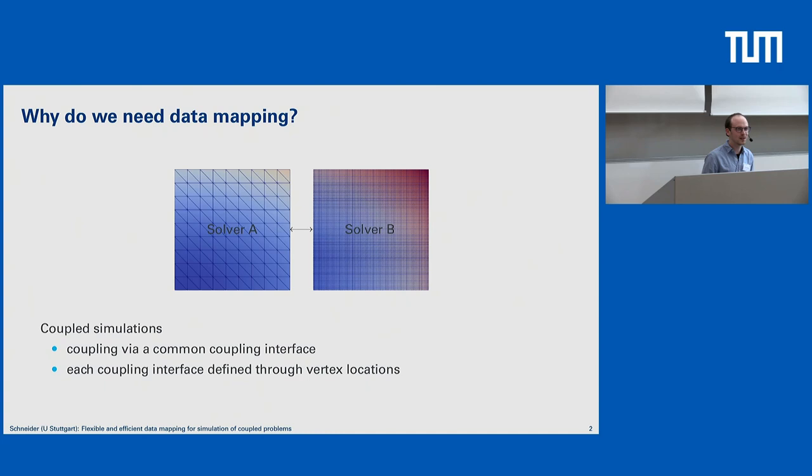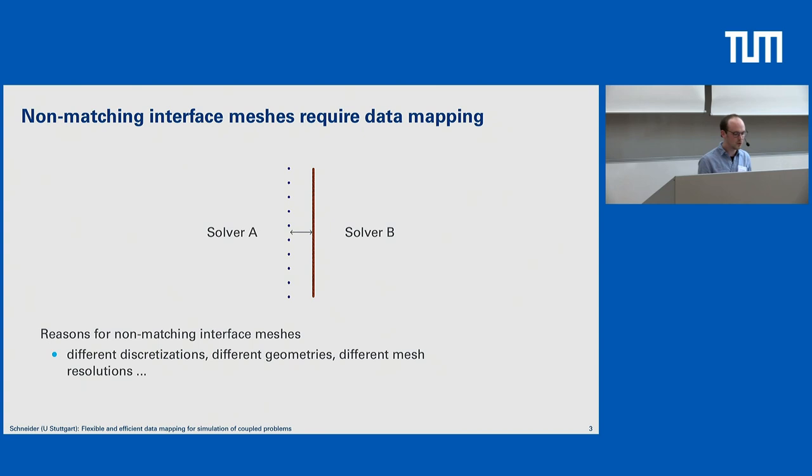In the most classical sense, we have in preCICE two solvers. We want to couple solver A and solver B along a coupling surface in the middle. We define a coupling interface in terms of the vertex locations, which are located here at the coupling interface. From the preCICE perspective, the interface would somewhat look like this.